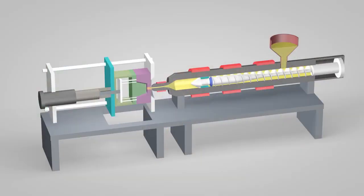An injection molding machine has three main parts: the injection unit, the mold, and the clamp.